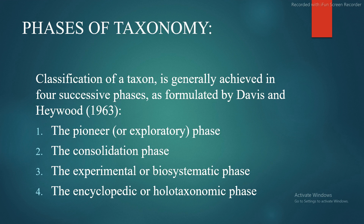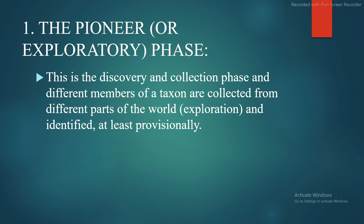The phases of taxonomy: classification of a taxon is generally achieved in four successive phases as formulated by Davis and Heywood (1963) — the pioneer or exploratory phase, the consolidation phase, the experimental or biosystematic phase, and the encyclopedic or holotaxonomic phase.